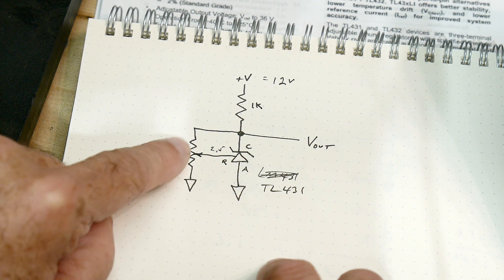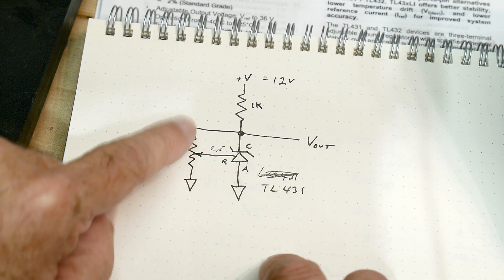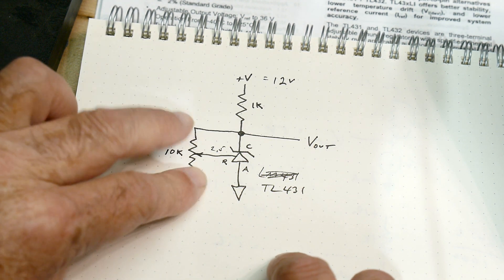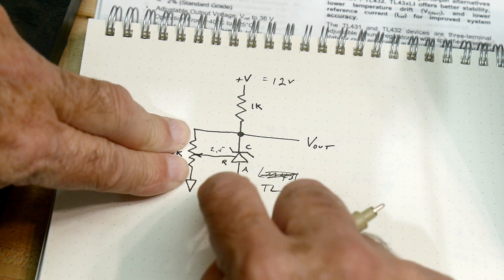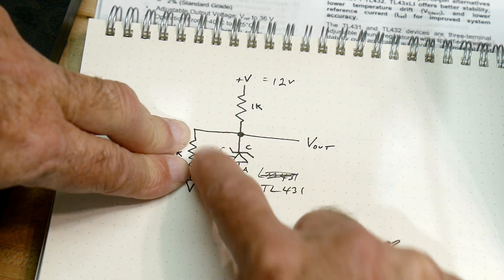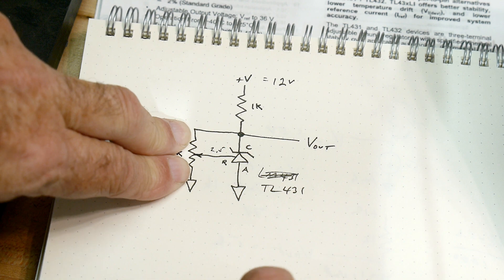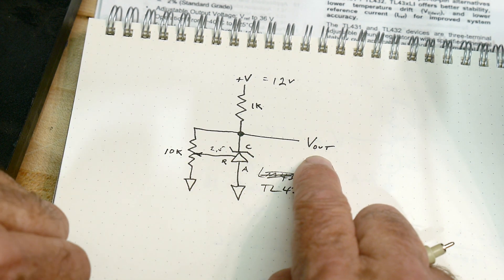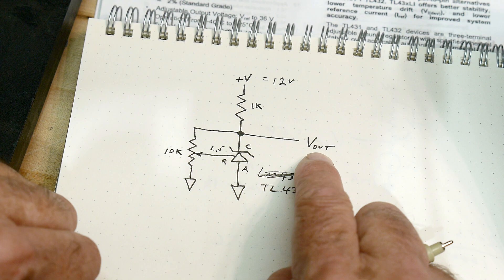And we have this potentiometer. So if we have it set to 5k, 5k. If we have 5 volts here, then halfway will be 2.5 volts. So if this is set to 5k, 5k, the output will be 5 volts.